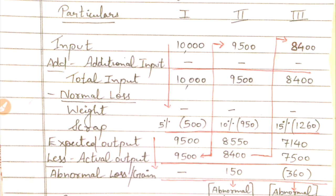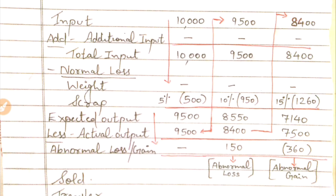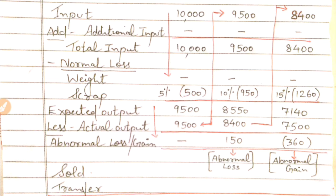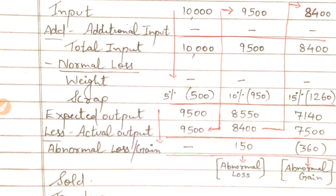Now we go to the second process. The actual output of Process 1 — 9,500 units — becomes the input of Process 2. No additional input is given, so total input is 9,500 units. Normal loss is scrap loss at 10%, so 10% of 9,500 is 950 units. Therefore, the expected output for Process 2 is 9,500 minus 950 = 8,550 units.